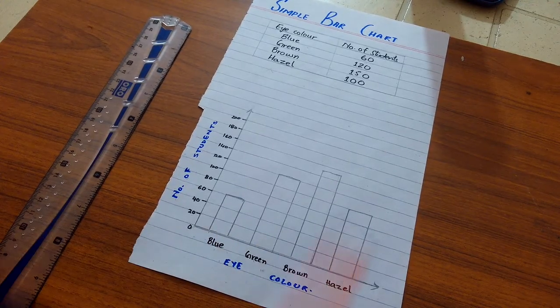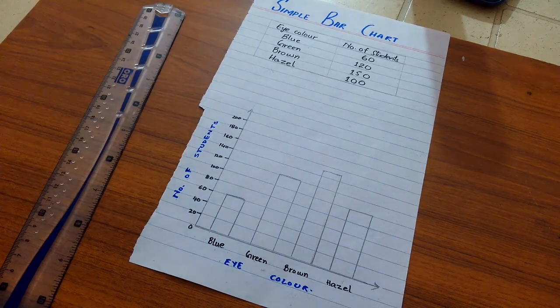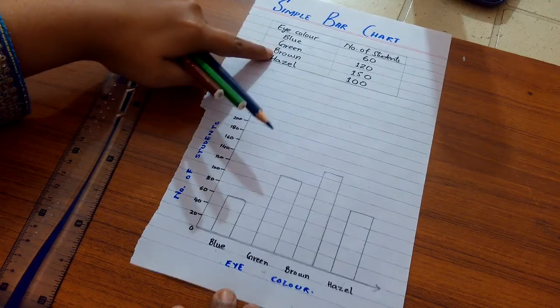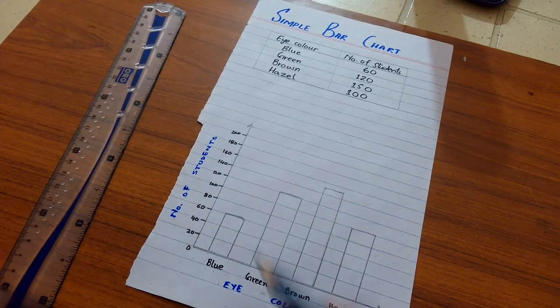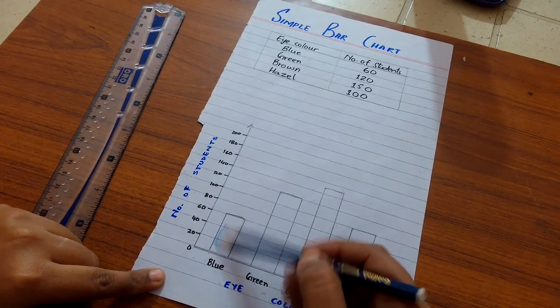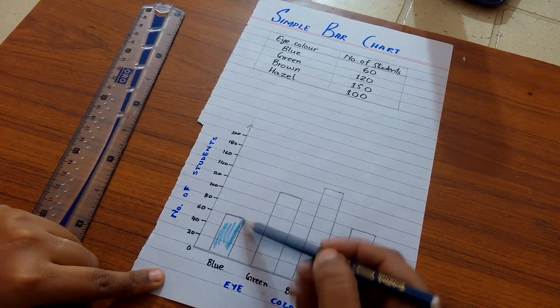We can also show these bars with the help of colors because colors are given here. So I am using the same colors, blue for blue, green for green. Otherwise it's your choice to choose different colors.